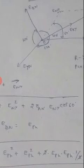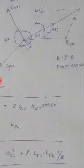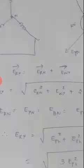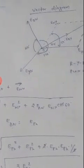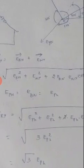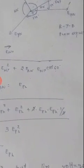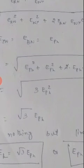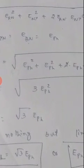So now what is E_RN, what is E_YN, what is E_BN? All are phase voltages, so we can write it as E_ph. Now substituting all this as E_ph, we will be having root of E_ph² plus E_ph² plus 2·E_ph·E_ph·cos 60°. Since cos 60° is half, we will be getting root of 3·E_phase².